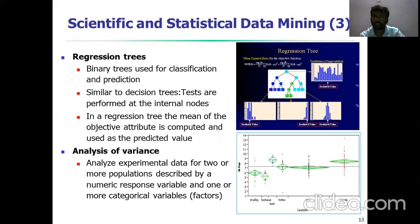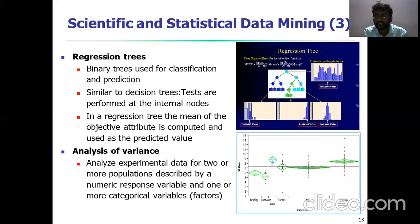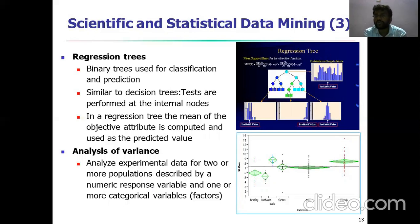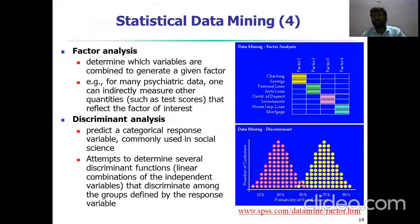Statistical data mining methods use different classifications and clustering values. Analysis of variance examines how many experimental data points are described for two or more populations using a numerical response variable, with one or more categorical factors. Factor analysis uses data mining to check savings and other values across different factors — Factor 1, Factor 2, Factor 3, Factor 4 — where each factor has a few data mining dataset values with different attribute types.